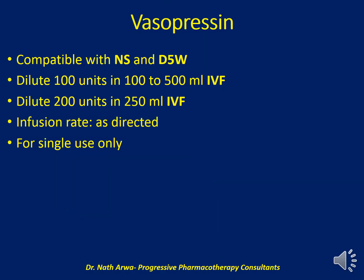Vasopressin is compatible with both 5% dextrose and normal saline. We should dilute 100 units in 100 to 500 ml of IV fluid, or 200 units in 250 ml of IV fluid. After dilution and homogenizing, the infusion rate is directed by the critical care team or managing physician. This product is for single use only — prepare what you require and avoid storing leftovers.